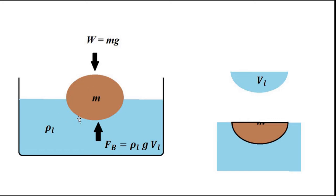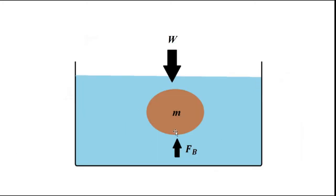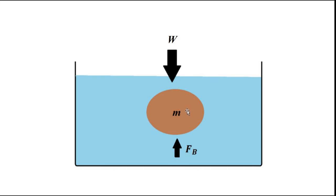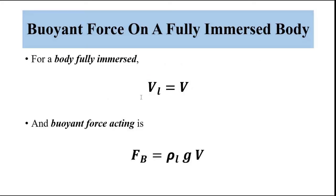This formula applies for a partially immersed object. Suppose a body is fully immersed — in this case, the volume of liquid displaced by the body is equal to the total volume of the object, let's call it V. When the body is fully immersed, it displaces a volume of liquid equal to its own total volume V. So the volume of displaced liquid equals the volume of the body, and in this case the buoyant force is maximum: ρ_L × g × V.